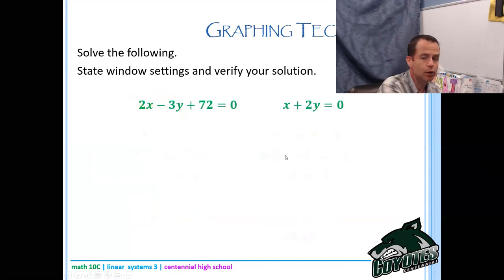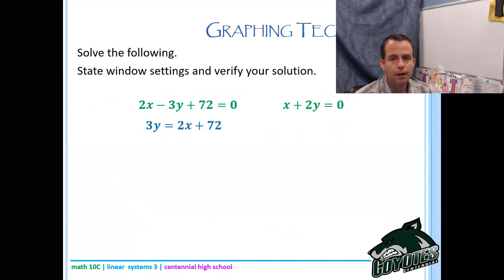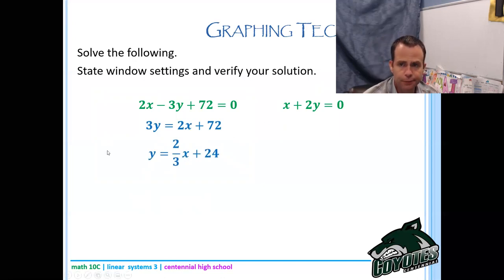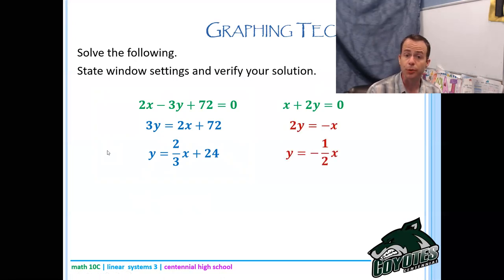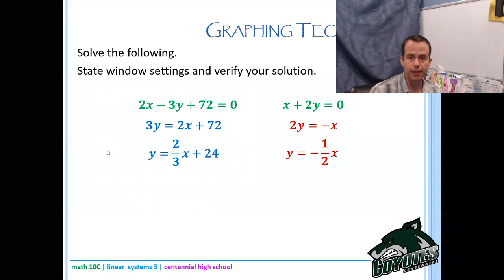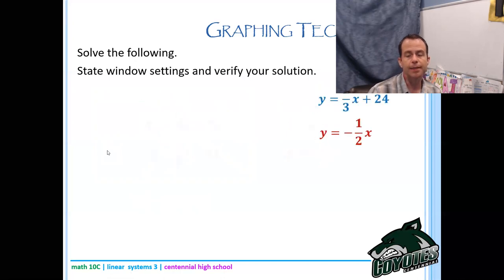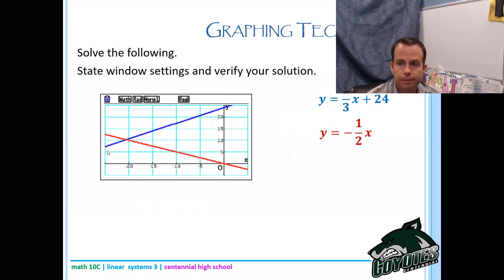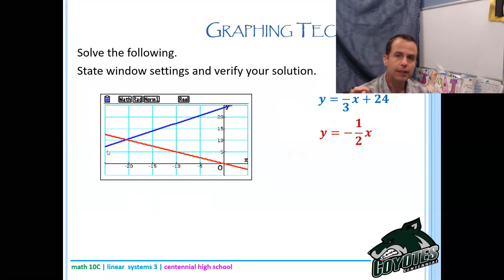Next problem: isolating y gives us y = 2/3 x + 24 for the first equation, and y = -1/2 x for the second. Go ahead and put those into Y1 and Y2, overwriting what's there — remember to hit Execute or Enter after you're finished typing. Then graph and you should get a picture like this.